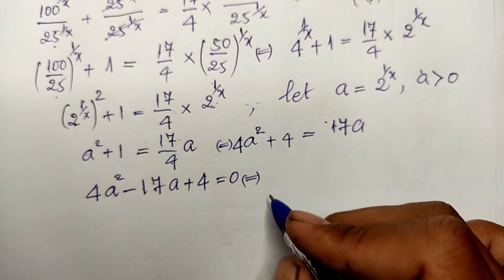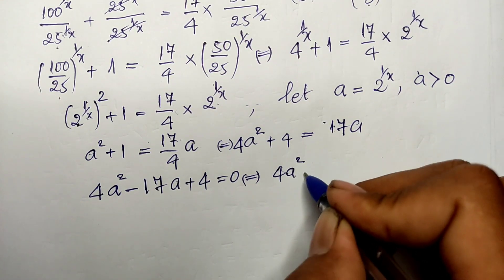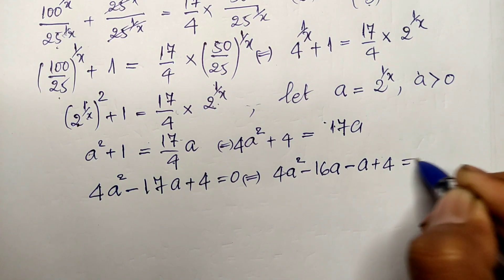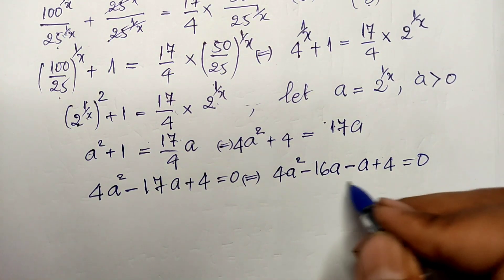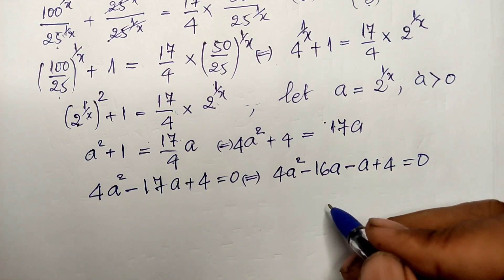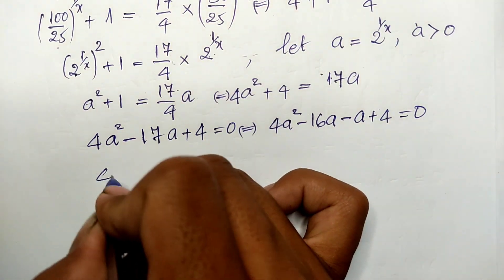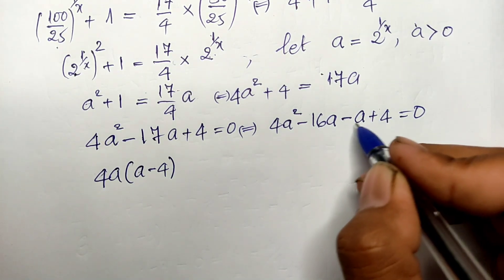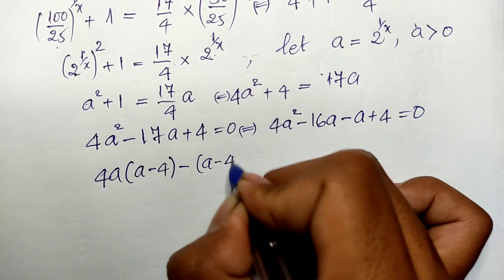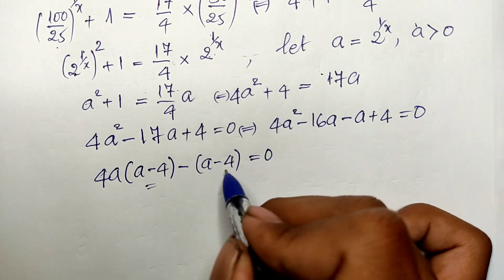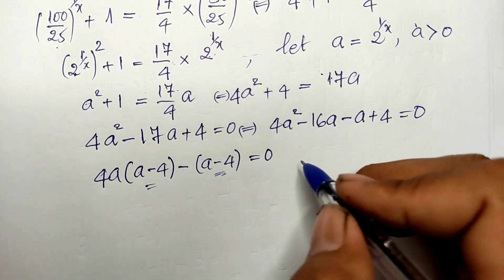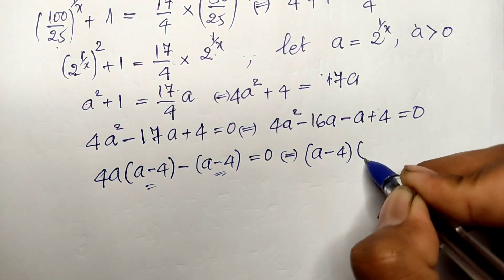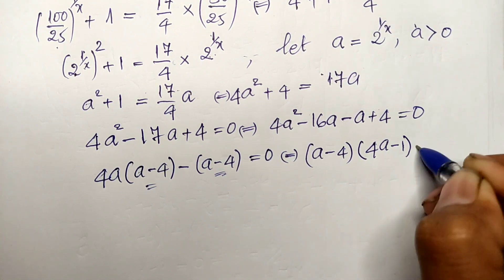We factor the quadratic. We split the middle term: 4a squared minus 16a minus a plus 4 equals 0. Grouping: 4a times a minus 4, minus 1 times a minus 4, equals 0. Taking out the common factor a minus 4: we get a minus 4, multiplied by 4a minus 1, equals 0.